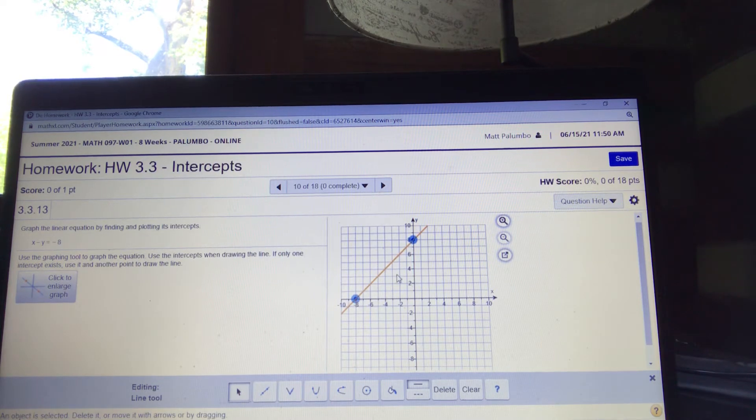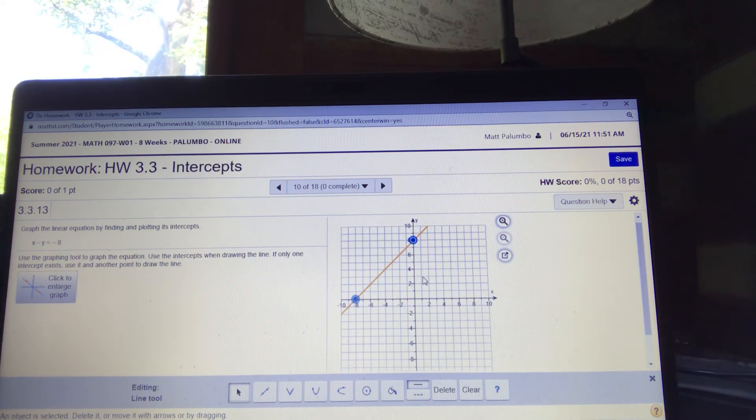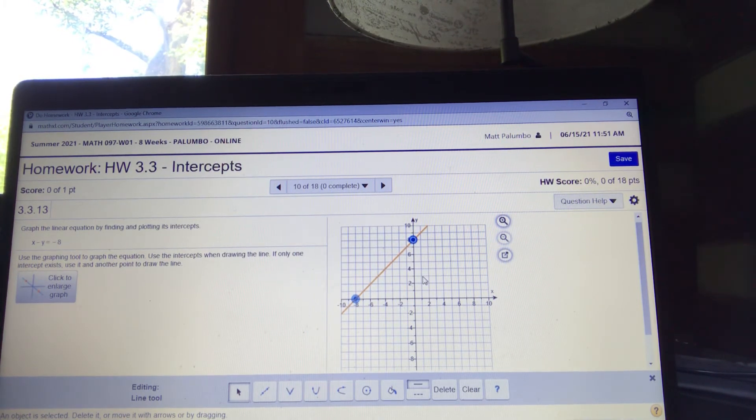Once you click the second point, it only lets you click two points to make a line. Once you click the second point, it's set. Okay. If you made a mistake, you could drag it. But I know I didn't make a mistake. My test point is two and ten. So that would be two to the right and ten up. Boom. Right there on the line.